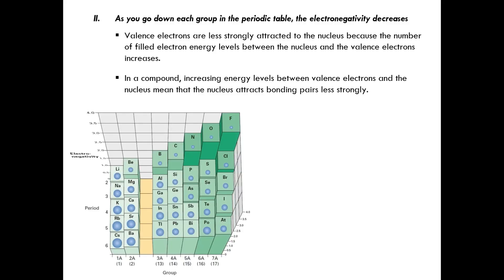The electrons in those inner energy levels contribute to the repulsion that pushes valence electrons outward and counteracts the nucleus's attempt to draw them in. In a compound, increasing energy levels between valence electrons and the nucleus means that the nucleus attracts bonding pairs less strongly. The image on the bottom left draws attention to the relationship between electronegativity and atomic size. You can clearly see that as the atomic size increases, electronegativity decreases and vice versa. This graph shows that fluorine, with the highest amount of electronegativity, actually has the smallest atomic size.